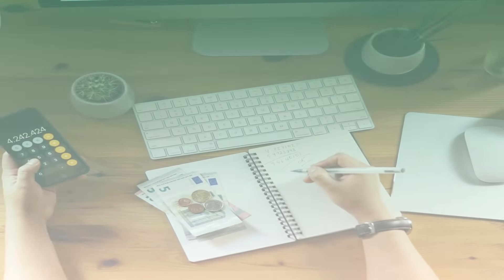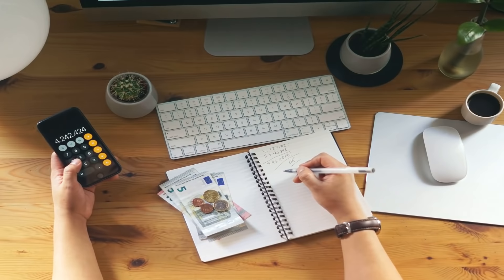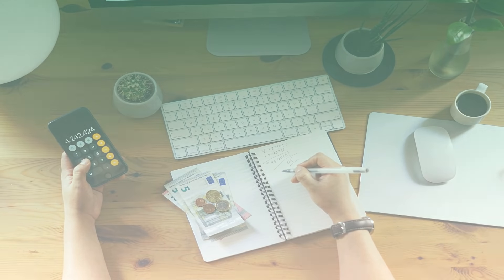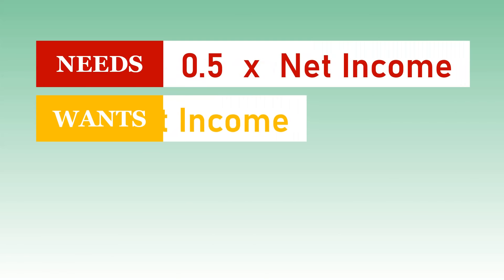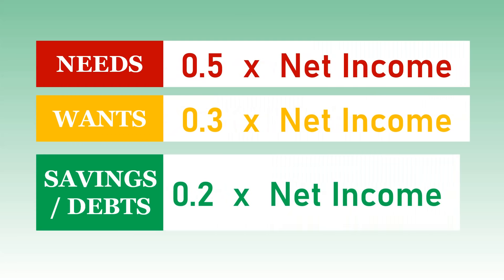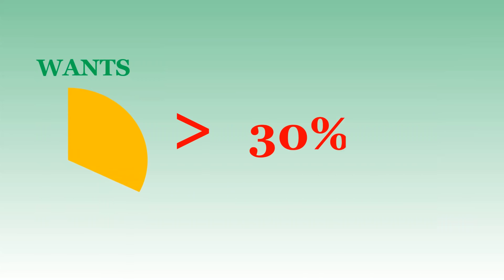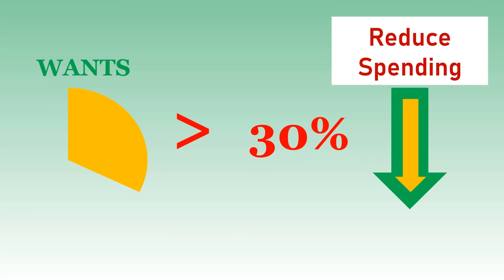Saving money can be difficult, and life often throws unexpected expenses at us. By following the 50-30-20 rule, you'll have a plan with which to manage your net income. If you find that your expenditures on wants are more than 30%, you can find ways to reduce those expenses in order to contribute more funds to savings and retirement funds.